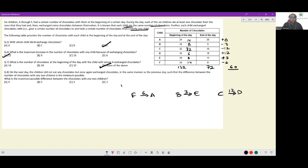Next day, the child did not eat any chocolates but once again exchanged chocolates in the same manner as the previous day such that the difference between the number of chocolates with any two children is minimum possible. Then what is the greatest difference between the chocolates with any two children? Now, see 72 chocolates are left at the end of the day. So people have not eaten any chocolates. They have simply exchanged.